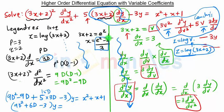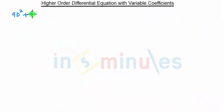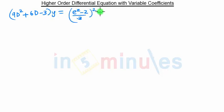From here we substitute x as (e raised to z minus 2) upon 3. So x squared becomes (e raised to z minus 2 upon 3) squared, plus e raised to z minus 2 upon 3 plus 1. So our new equation becomes 9d squared plus 6d minus 3 times y equal to (e raised to z minus 2 upon 3) squared plus (e raised to z minus 2 upon 3) plus 1.